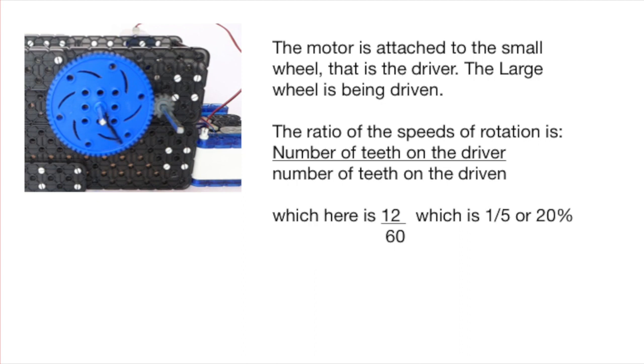The ratio of the speeds depends upon the ratio of the number of teeth on each wheel. That here is 12 to 60 which is a fifth or the large wheel is going around at 20% of the speed of the small wheel.